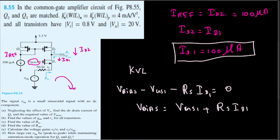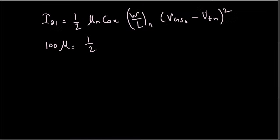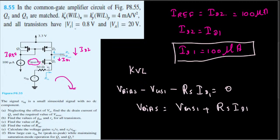μ_n C_ox can be written as k'_n as well. k'_n is equal to μ_n C_ox—so that's the only thing you have to know—and that is 4 milliamperes per voltage squared. So here, instead of all these things, we can replace that one with 4 milliamperes.